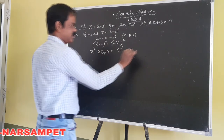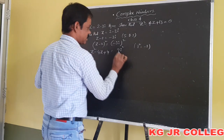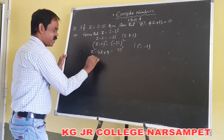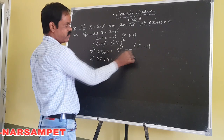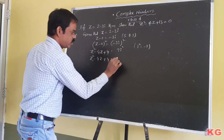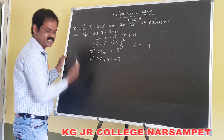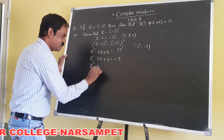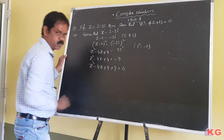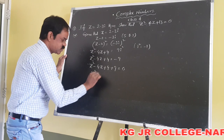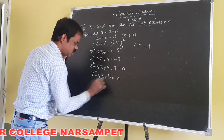According to the definition of i, we know that i squared equals minus 1. Substituting here, we get z squared minus 4z plus 4 equals 9 times minus 1, which equals minus 9. Taking minus 9 to the left side, we get z squared minus 4z plus 4 plus 9 equals 0. So 4 plus 9 equals 13, giving us z squared minus 4z plus 13 equals 0.